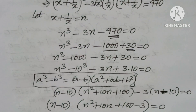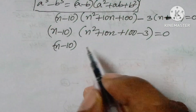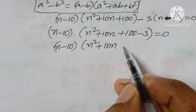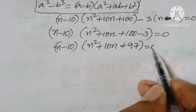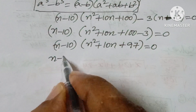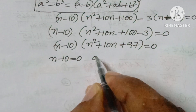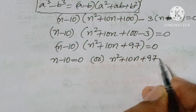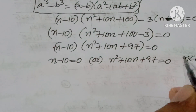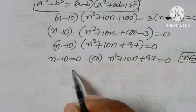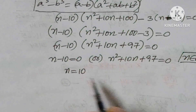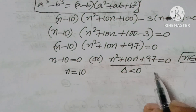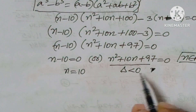So we have (n − 10)(n² + 10n + 97) = 0, meaning n − 10 = 0 or n² + 10n + 97 = 0. Since n belongs to real numbers, we check the discriminant of the quadratic: delta is less than 0, so we neglect that root.